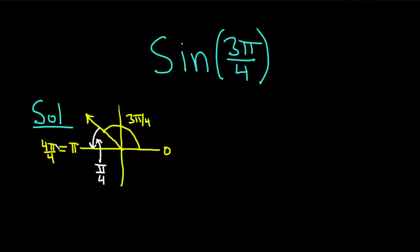Because if you take 4 pi over 4 and you subtract 3 pi over 4, you're going to get pi over 4. And so now we can think about the sine of pi over 4.